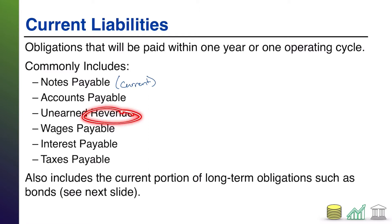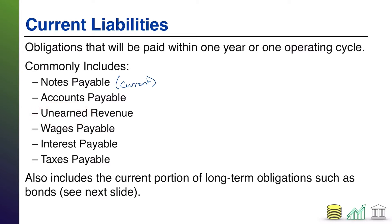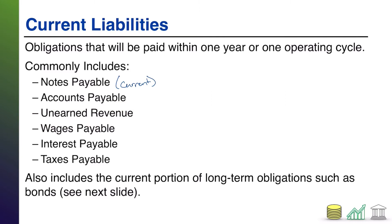Unearned revenue — don't get thrown off by the word revenue being in here, this is a liability. Whenever you see the word unearned, what that means is someone has paid you in advance. That person recorded a prepaid asset because they paid you in advance, and now you owe them some sort of service or sale, whatever your revenue-generating business is. This is a liability representing that you have money from someone that you haven't earned yet because you haven't fulfilled your end of the bargain. Usually someone isn't going to pay you in advance over a year ahead, so this is usually coming due within a year.